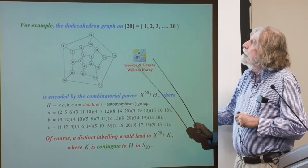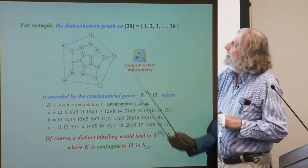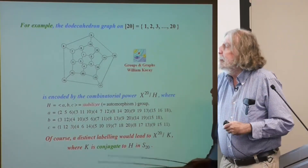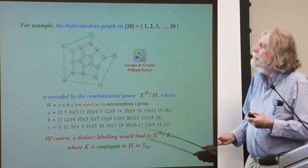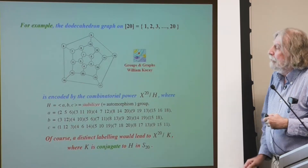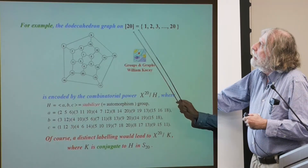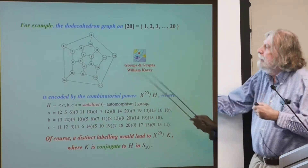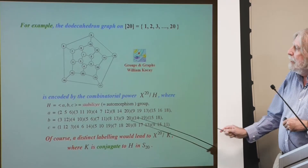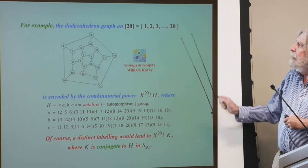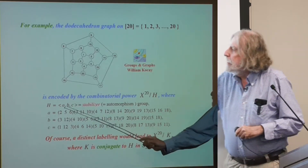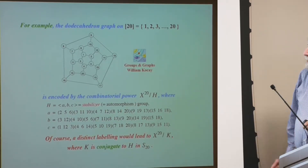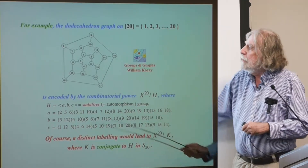For example, if you take the class of all dodecahedron graphs — each dodecahedron graph lives on 20 vertices — all these graphs are encoded by a combinatorial power where H is the stabilizer or automorphism group of the structure. Here it is generated by three permutations expanded into cycles. And if you change the labeling, of course, the new stabilizer will be conjugate to the stabilizer which has been computed by group and graph software.